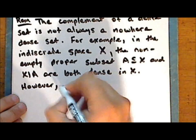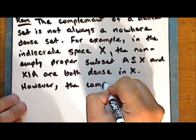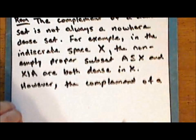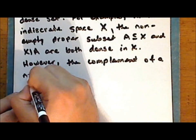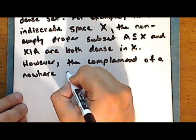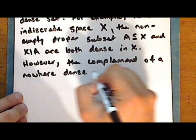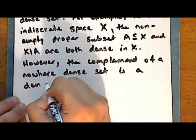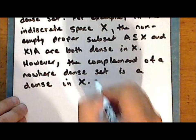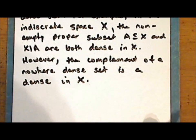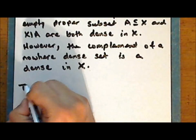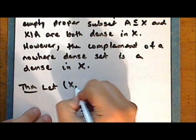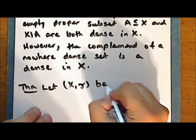However, the complement of a nowhere dense set is a dense set, and we will next prove this as a theorem. So let the set X together with some topology tau be a topological space.